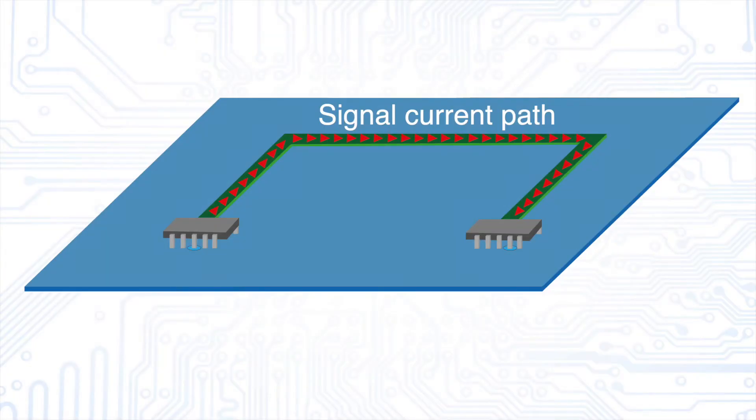The signal current path is often well known, but the return path is uncertain. Are you sure about the return path? Test yourself in this video.